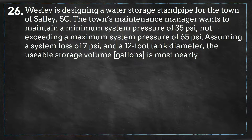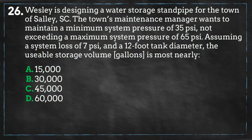Assuming a system loss of 7 PSI and a 12-foot tank diameter, the usable storage volume is most nearly: A. 15,000, B. 30,000, C. 45,000, or D. 60,000.